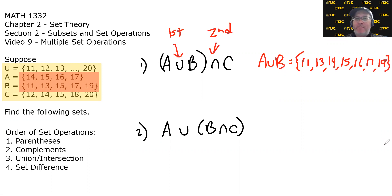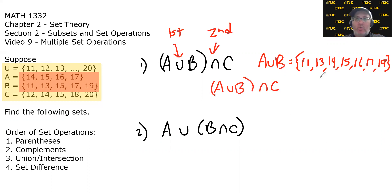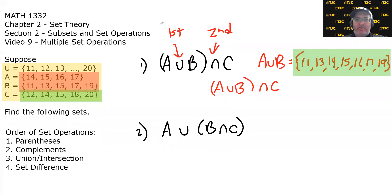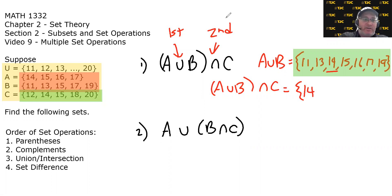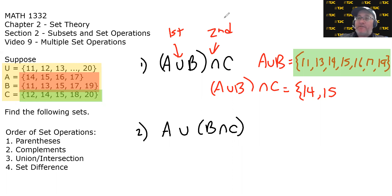Now we have A∪B, and we want to intersect it with C. We take our previous answer and intersect it with C. The intersection means what do they have in common? 14 is in both sets. 15 is in both sets. 16? No. 17? No. 18? No. 19? No. So A∪B intersect C is just {14, 15}.